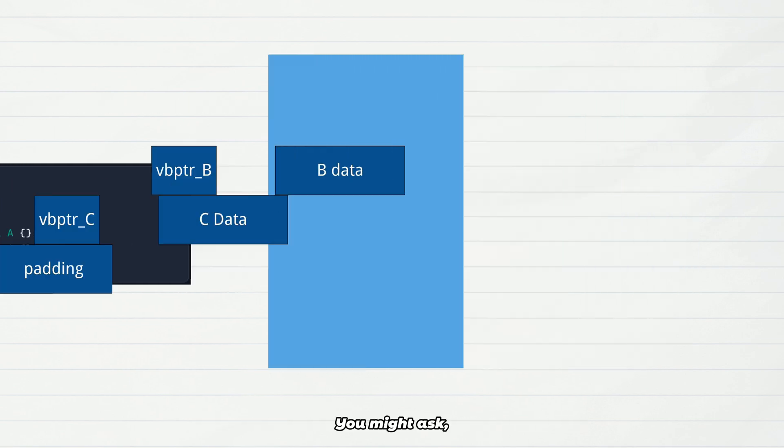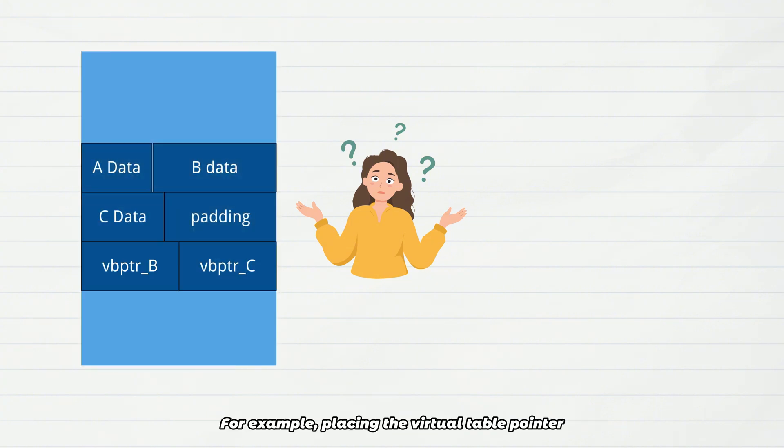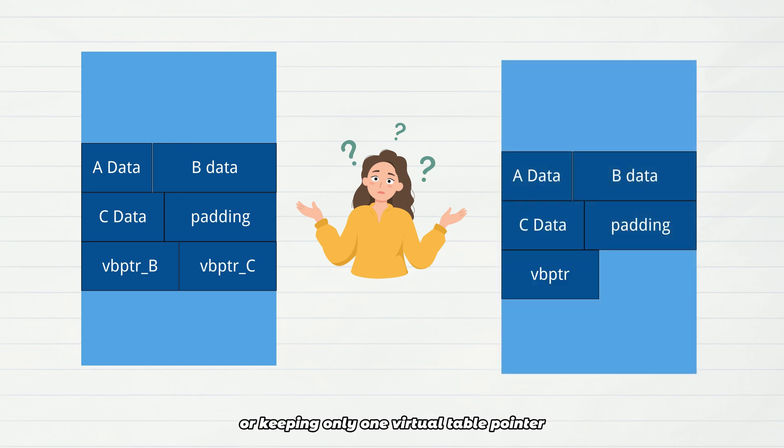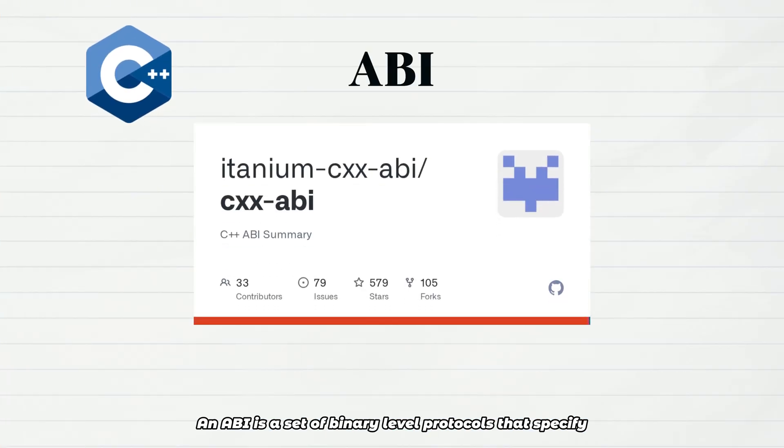You might ask: why doesn't the compiler just design a random layout? For example, placing the virtual table pointer at the end of the object, or keeping only one virtual table pointer in multiple inheritance? The answer is ABI: the Application Binary Interface.